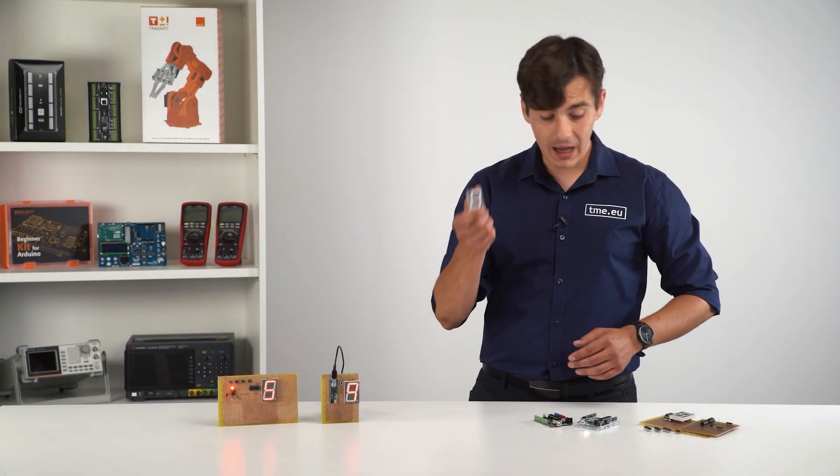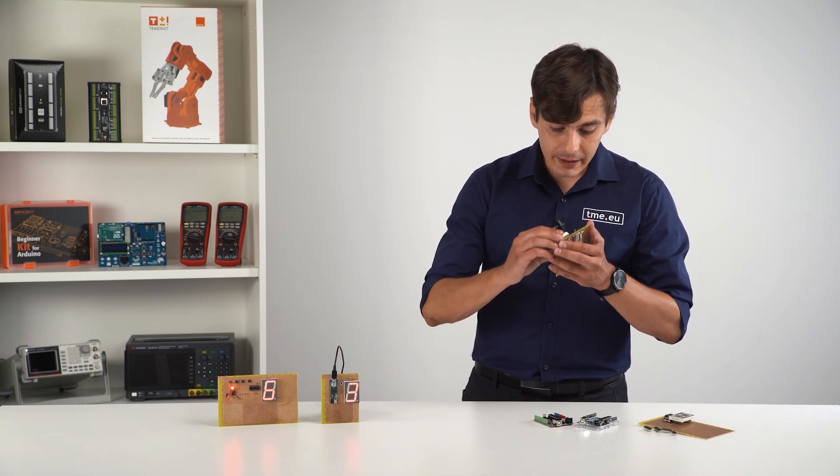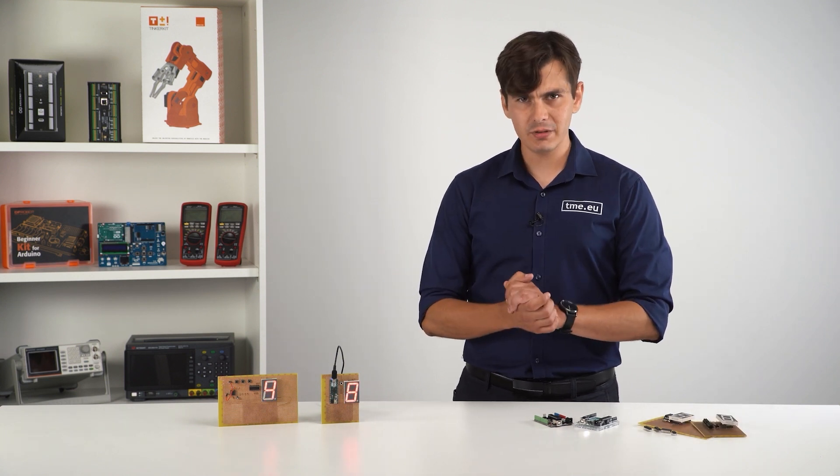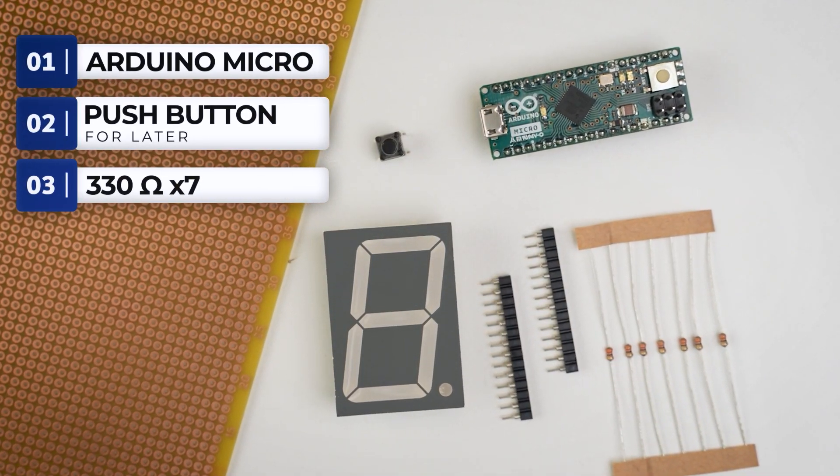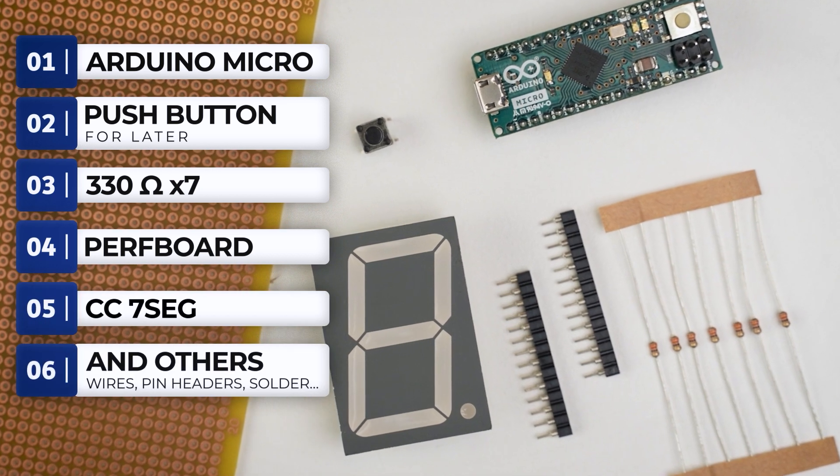Now that we understood how this seven segment works, we can continue to our simple circuit that counts from zero to nine. For the MCU circuit, we will use those components. An Arduino board, 330 ohm resistors, a prototyping board, a common cathode seven segment display.